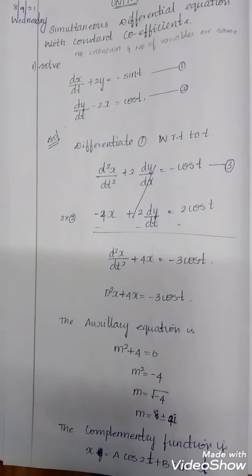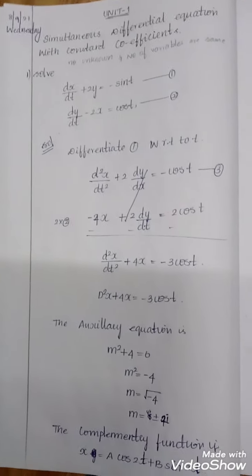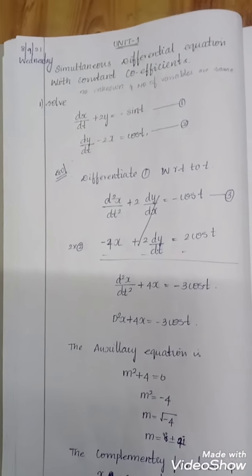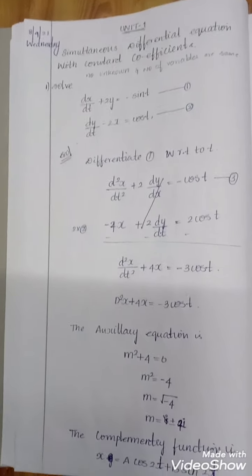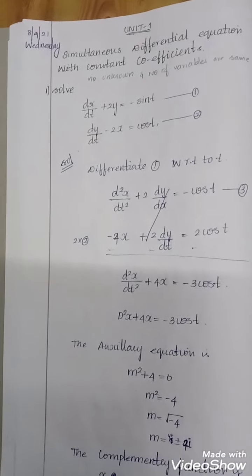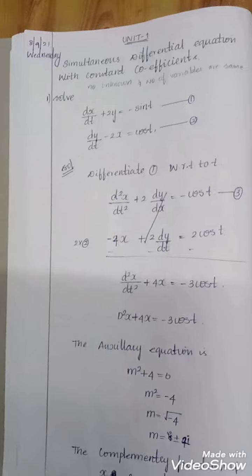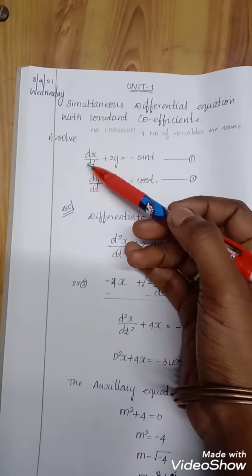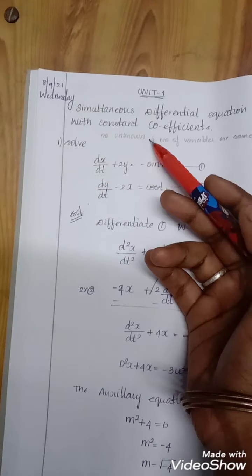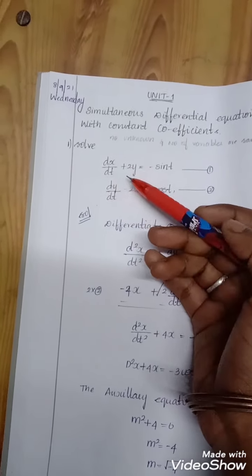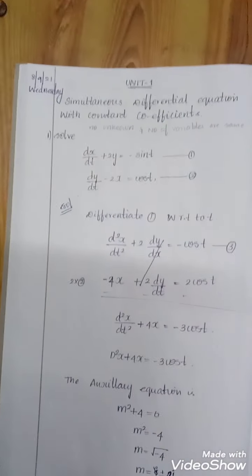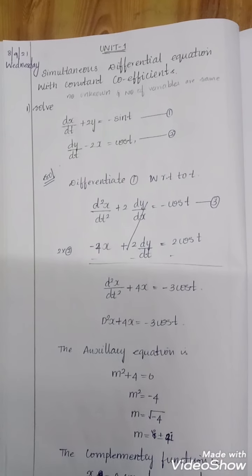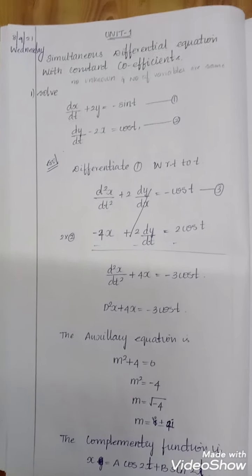Hello everyone, today we are going to see about a simultaneous differential equation with constant coefficient. A simultaneous differential equation can be identified when the number of unknown values and the number of variables are the same. For example, x and y are the unknown values, and the number of variables is also x and y, with t as the common dependent variable.